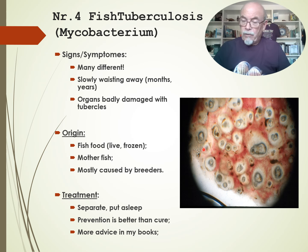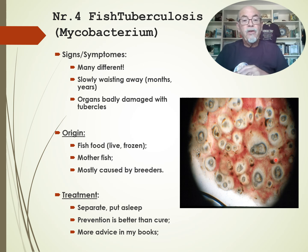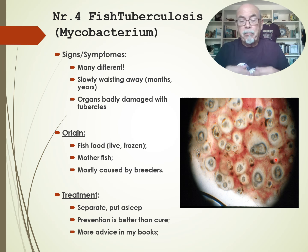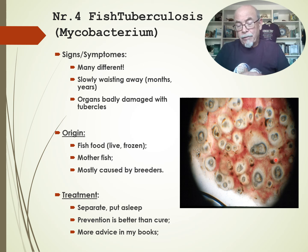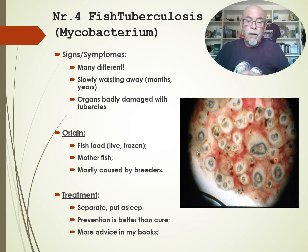Check the organs when the fish has died — you can see badly damaged organs, but the fish is dead by then. That fish gives you a lesson about what actions to take for the other fish in the aquarium. The origin is often fish food — it comes quite often from live or frozen fish food like mosquito larvae. The mother fish passes it on through the gonads to the babies and eggs. Mostly it's caused by breeders who don't maintain a good biosecurity system. For treatment: separate the fish, put it to sleep. Prevention is better than cure. Treat with functional food like Dr. Baslier's fish food. Read my books for more advice.